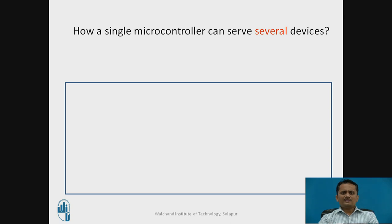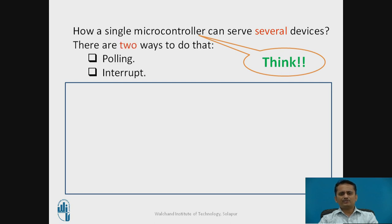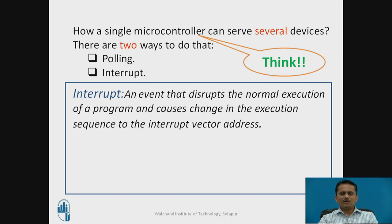Let us start with how a single microcontroller can serve several devices. For example, two switches are connected and you want an LED to turn on corresponding to each switch — when switch one is closed, LED one should be on; when switch two is closed, LED two should be on. This can be done using the polling approach, where the microcontroller continuously checks the port pins.